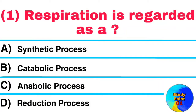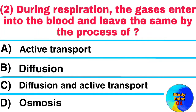Question No. 1. Respiration is regarded as a — Answer: Catabolic process. Question No. 2. During respiration, the gases enter into the blood and leave the same by the process of — Answer: Diffusion.